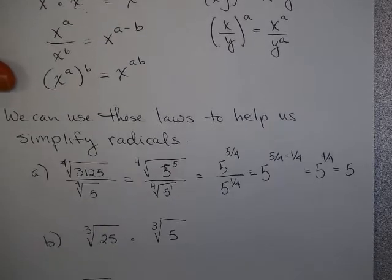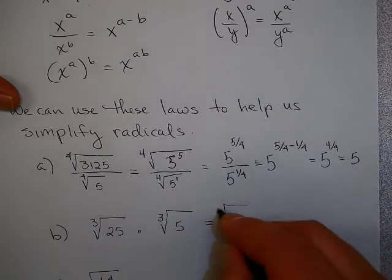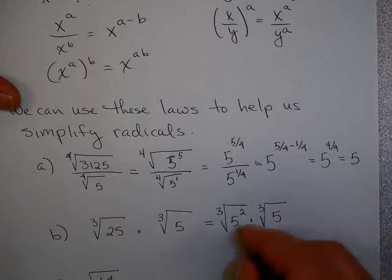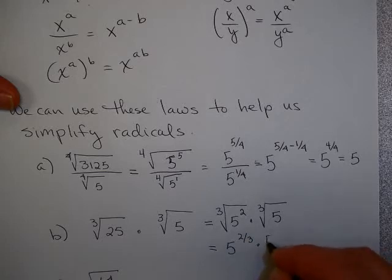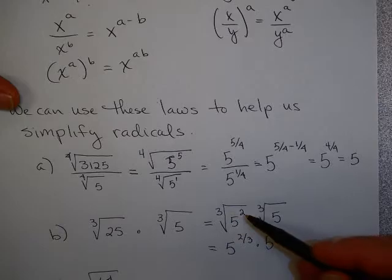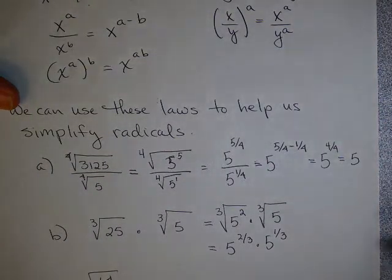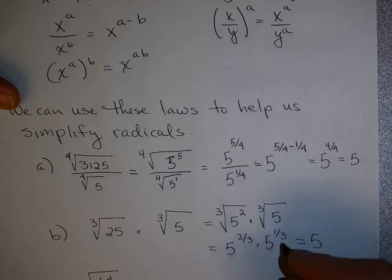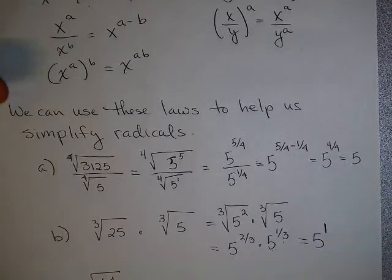Let's take a look at this one. I'm going to think about this using some of these laws of exponents. This is the cube root of 25, which by the way is 5 squared, times the cube root of 5. If I use rational exponents, that's 5 to the 2 thirds times 5 to the 1 third. What do we do when the base is the same? We add the exponents, so that's 2 thirds plus 1 third, which is 1. So that, again, is 5.